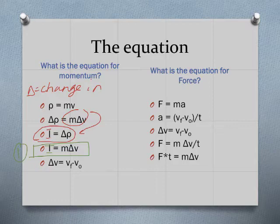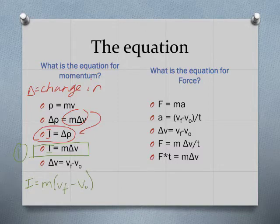Remember that ΔV is VF (final velocity) minus V0 (initial velocity), so impulse equals mass times (VF minus V0). The units are kilograms for mass and meters per second for velocity. Subtracting velocities doesn't change the units, so a change in momentum still has the same units as momentum: kg·m/s.